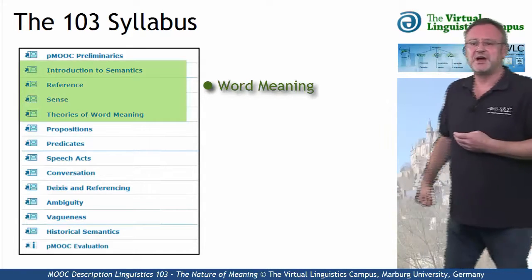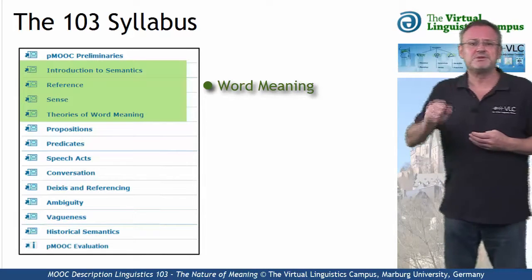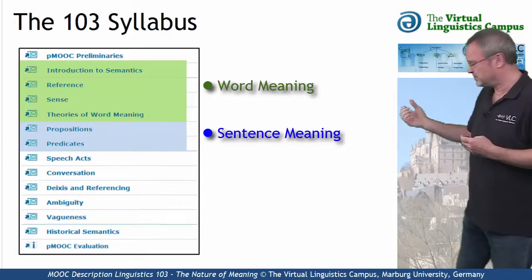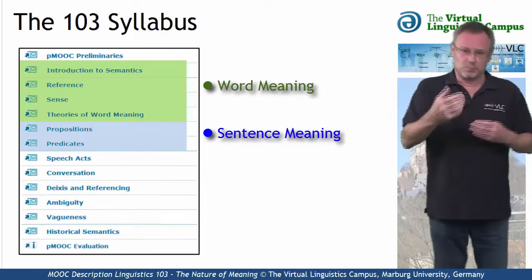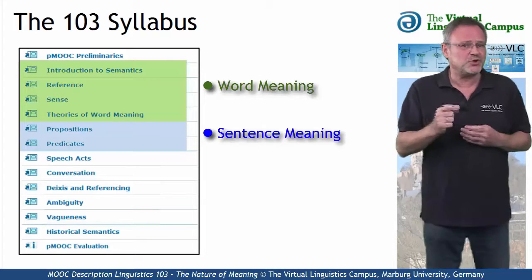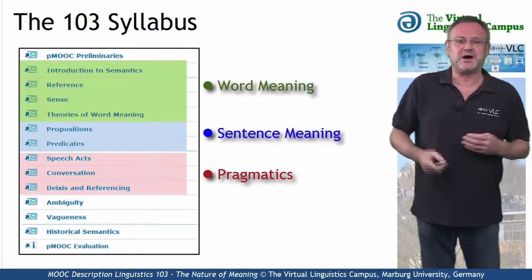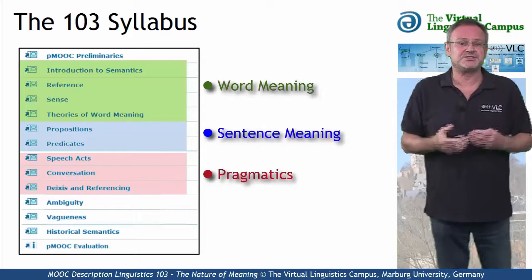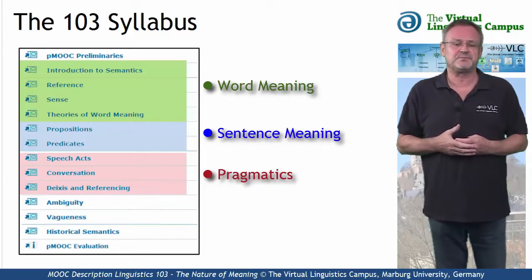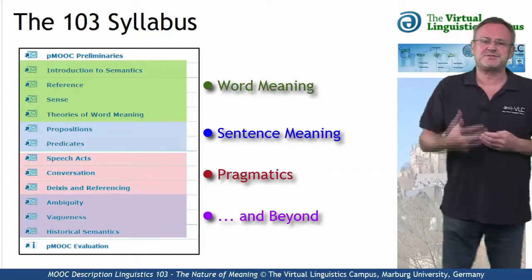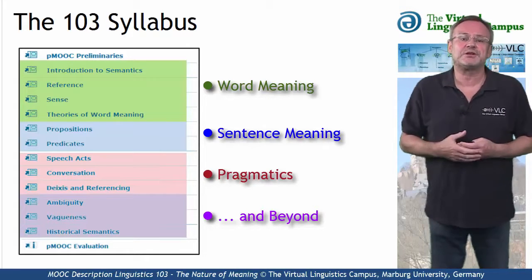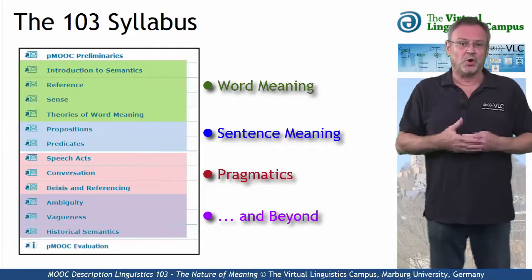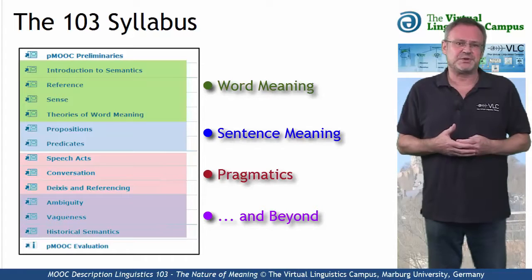The first part looks at word meaning from several angles. In part two, we will deal with the meaning of sentences, which involves an excourse into logic. The third part focuses on the meaning of utterances and discusses the principles underlying conversation. Beyond these three central parts, we will look at additional phenomena such as ambiguity and vagueness, or meaning from a historical perspective.